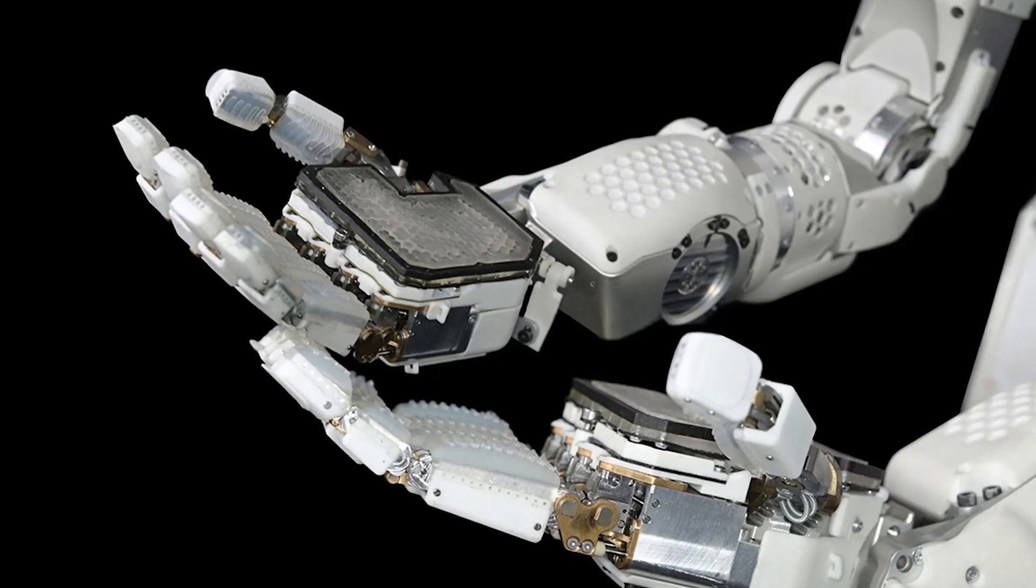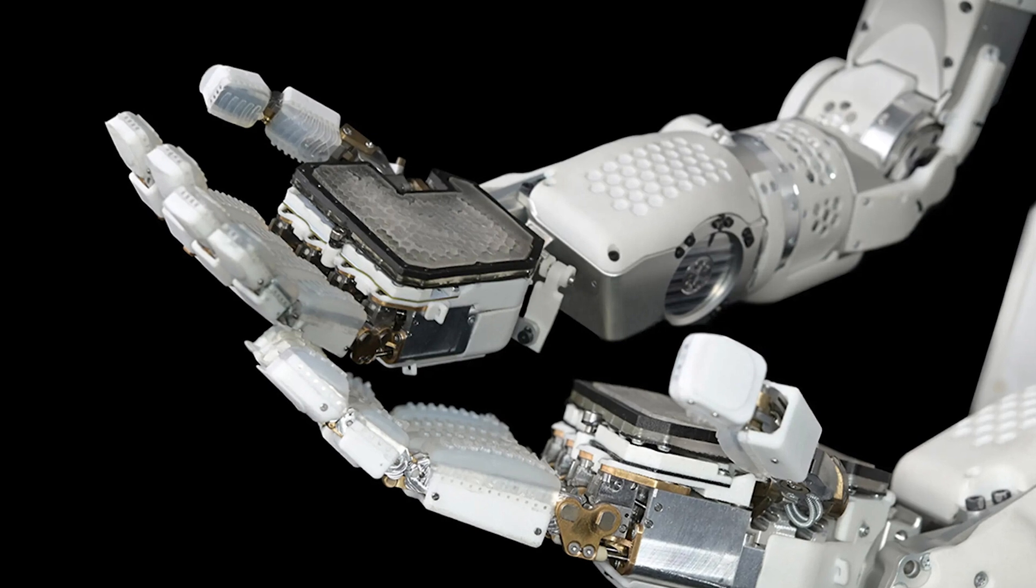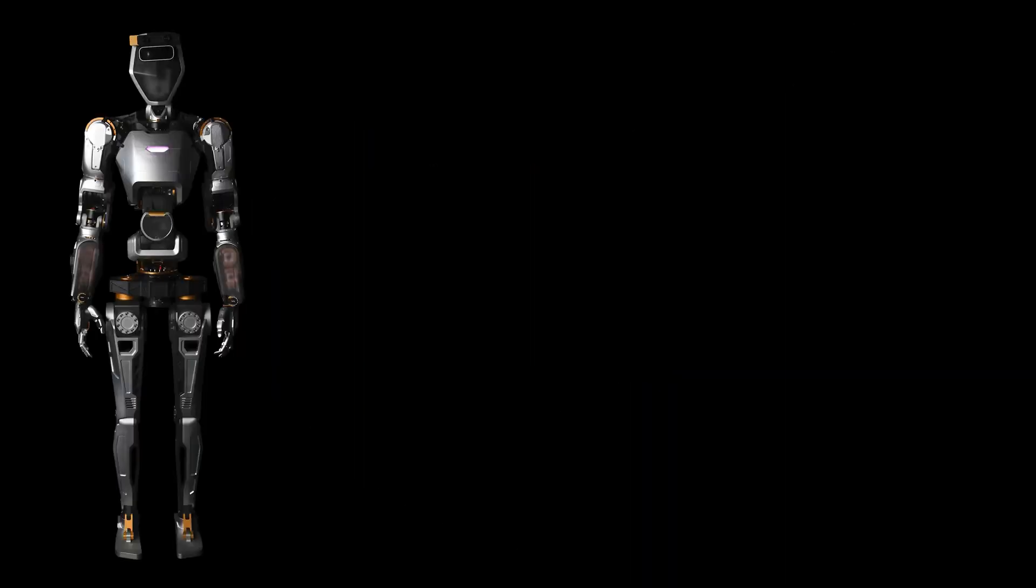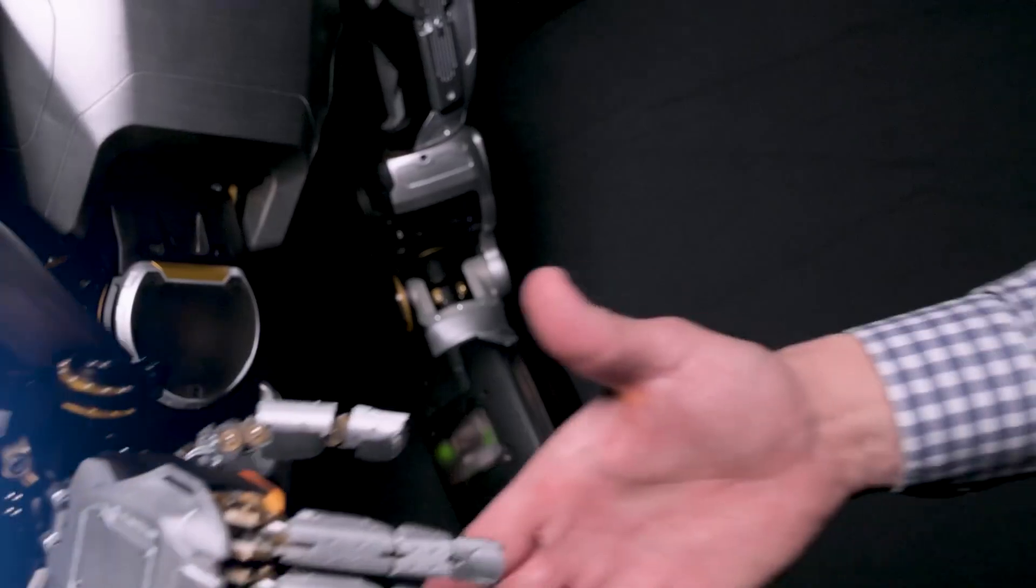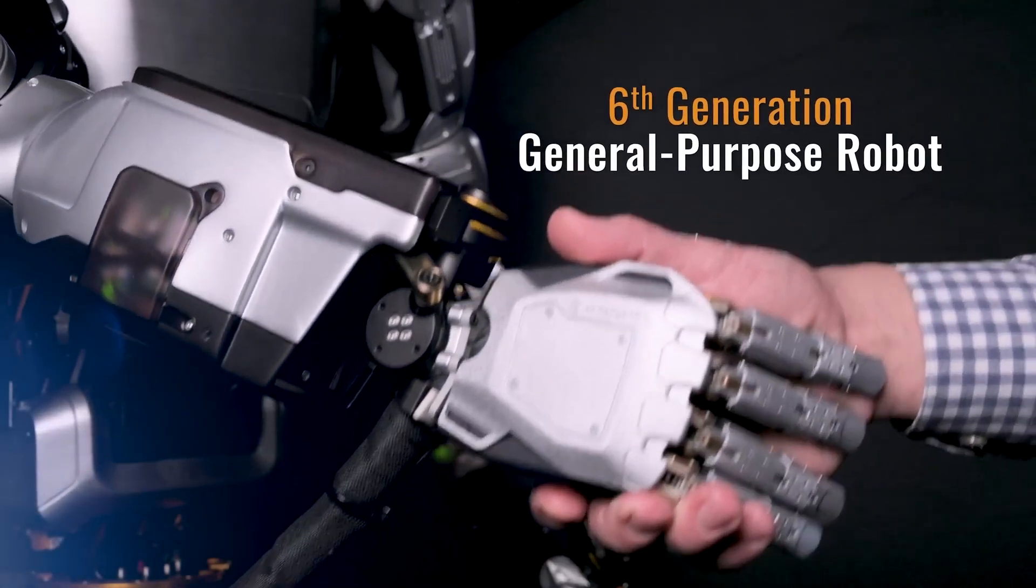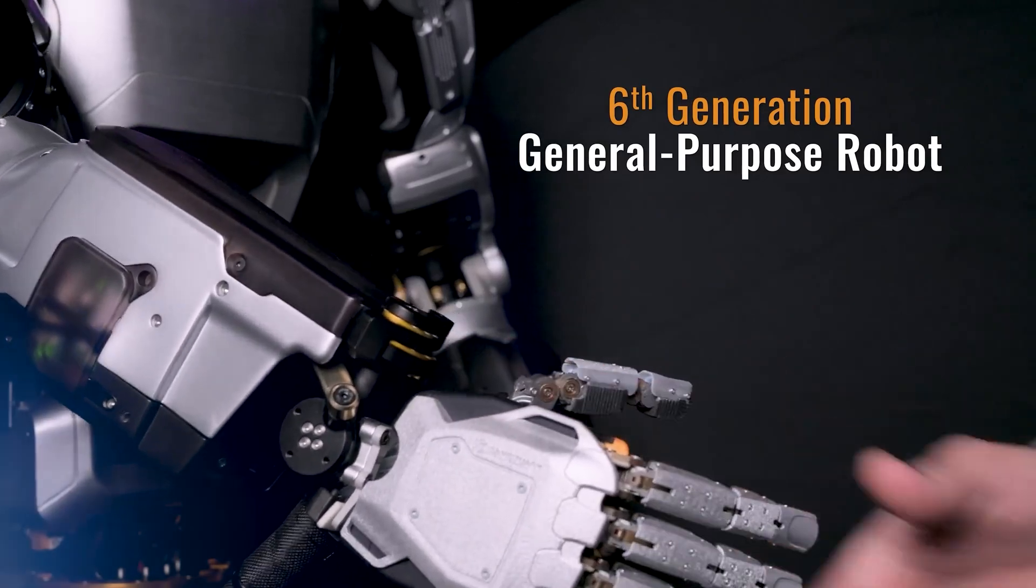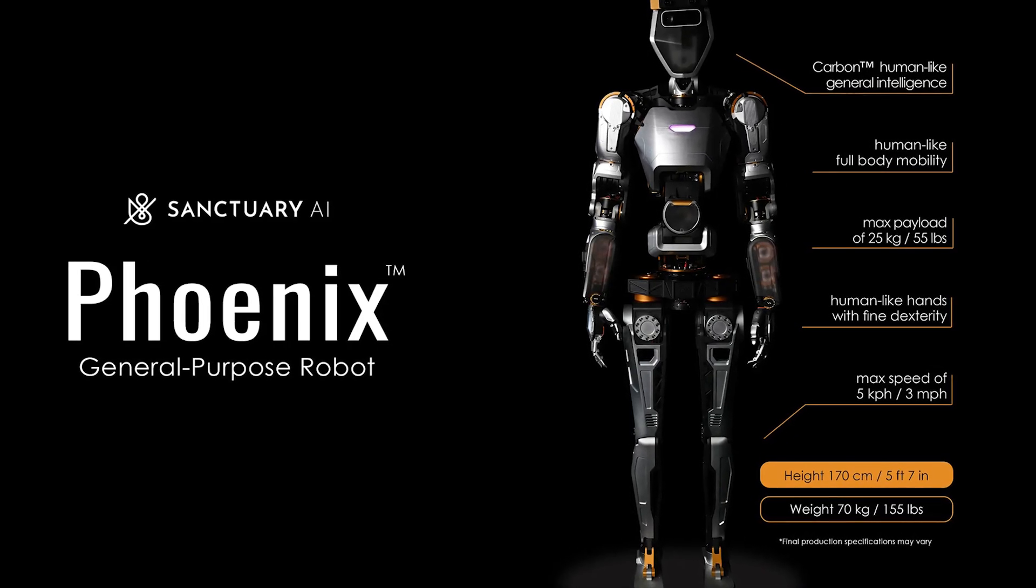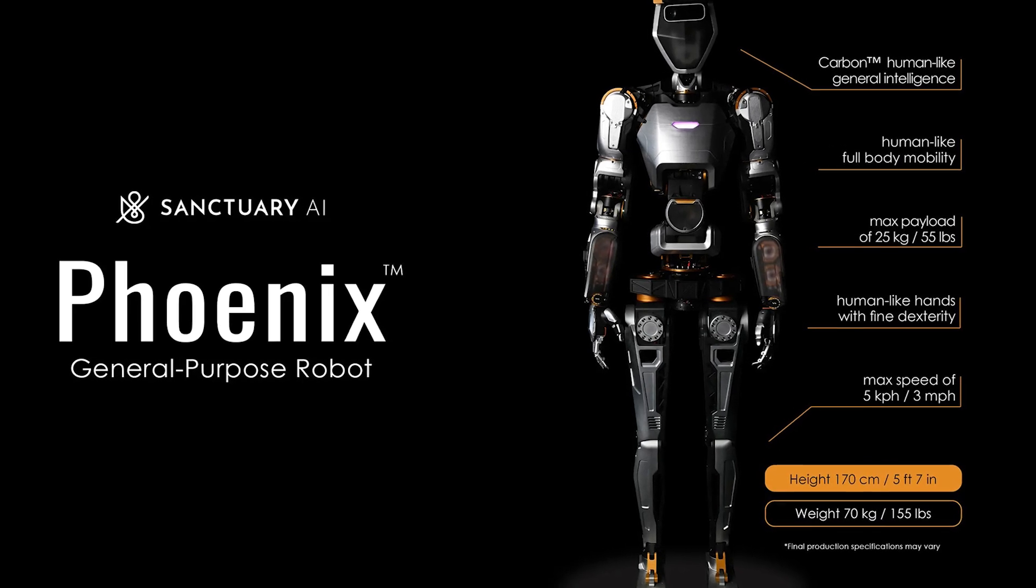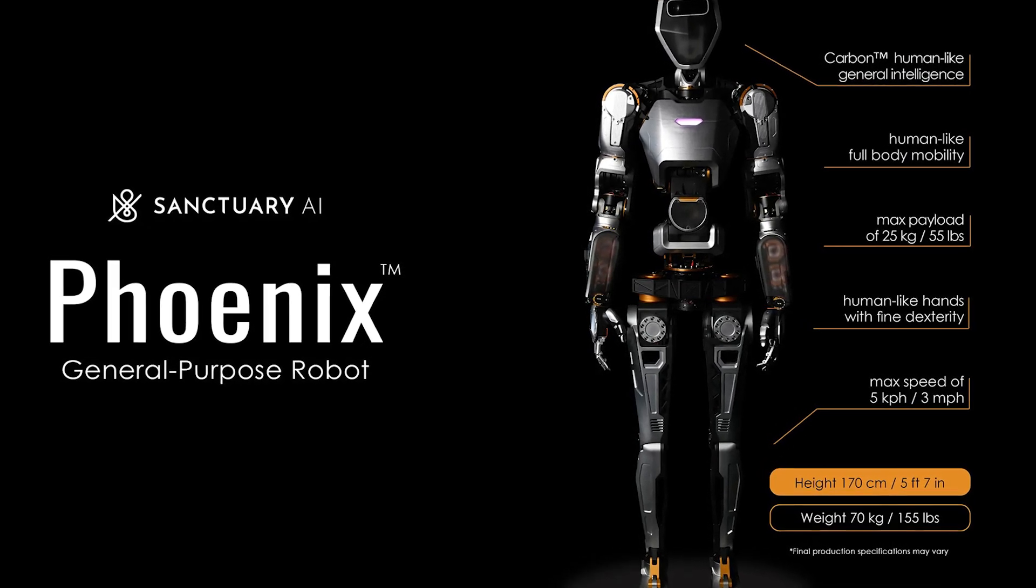So here's how it works: the operator puts on a virtual reality headset and connects to a motion capture system. It's like they're stepping into the robot's shoes, or should I say wheels, because for now this robot moves around on wheels. I guess they figured walking is overrated, or maybe they just haven't found the right pair of robot shoes yet.